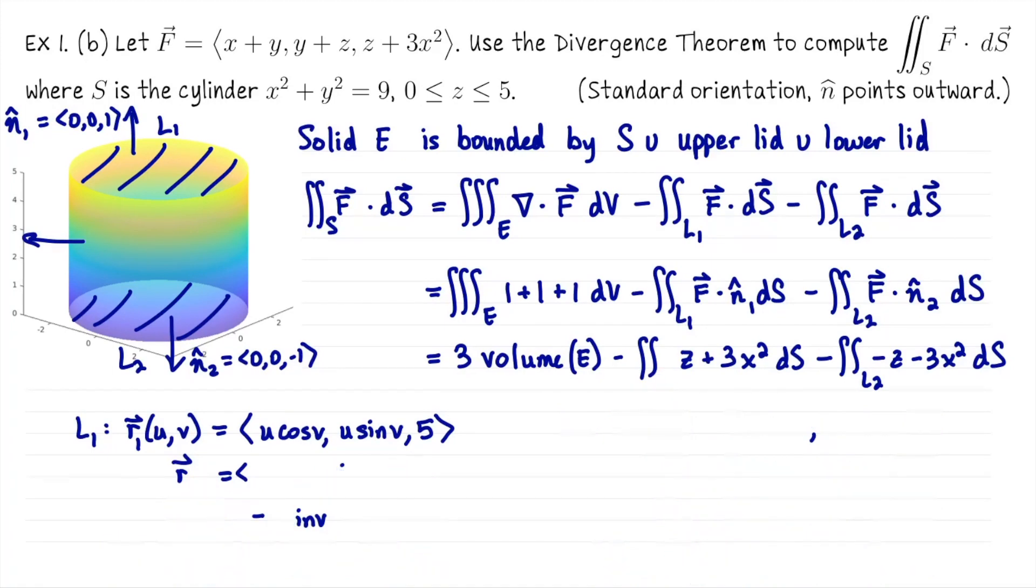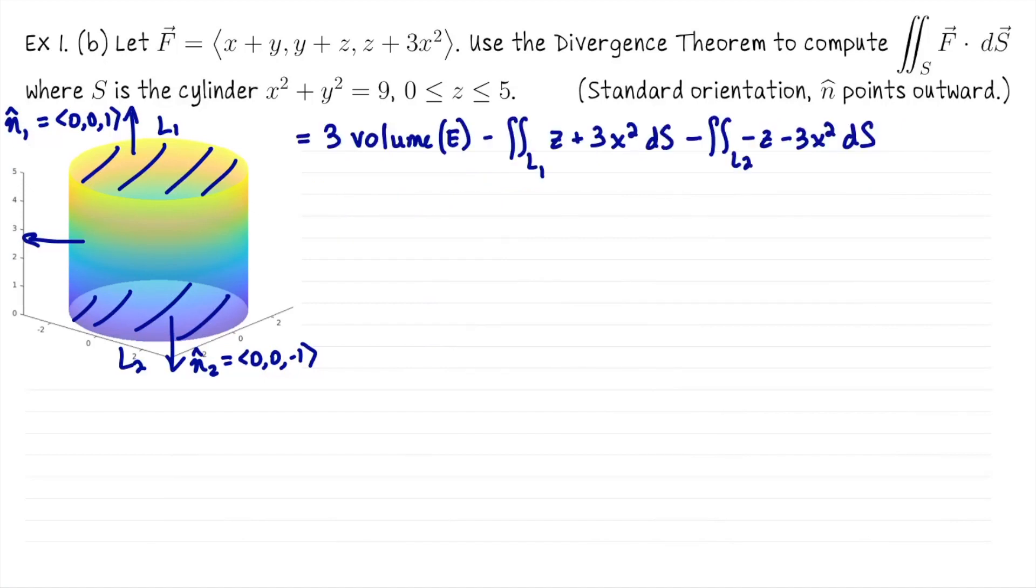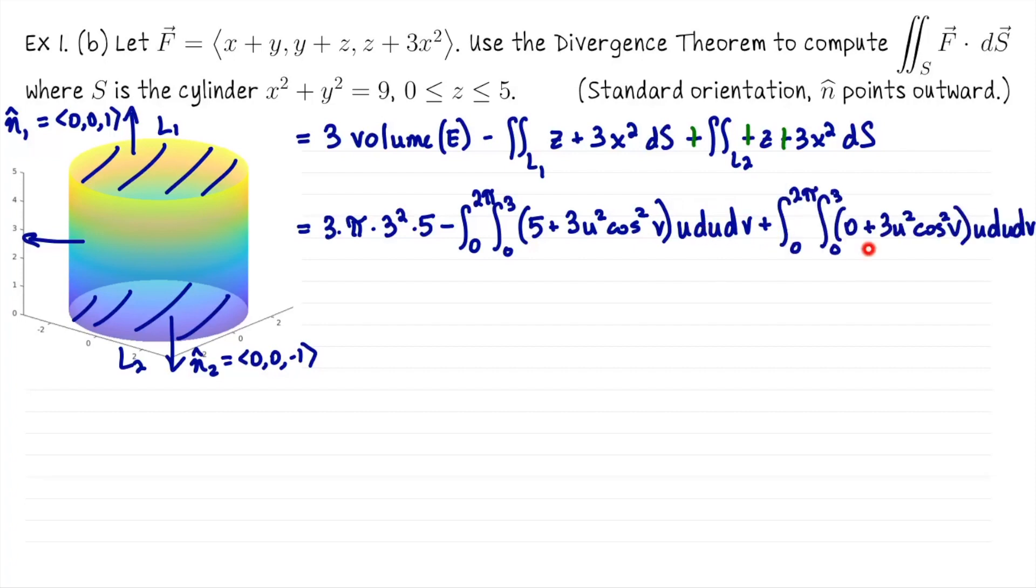Here's where we left off. I now have parametric descriptions and everything I need to set up the scalar surface integrals for the first lid and the second lid. Let me take that second one and distribute the negative. The volume of the cylinder is π times the radius squared times the height. So this is going to be 3π × 9 × 5. For the first scalar surface integral, it's the integral from 0 to 2π, 0 to 3, of 5 + 3u²cos²v times u, du dv. The next one is very similar except the z coordinate is 0.